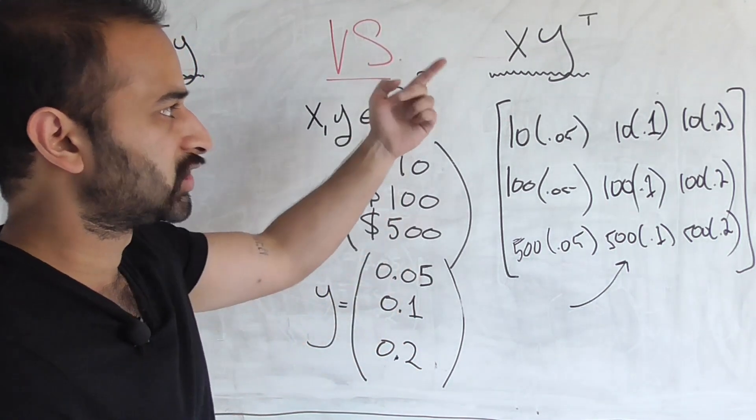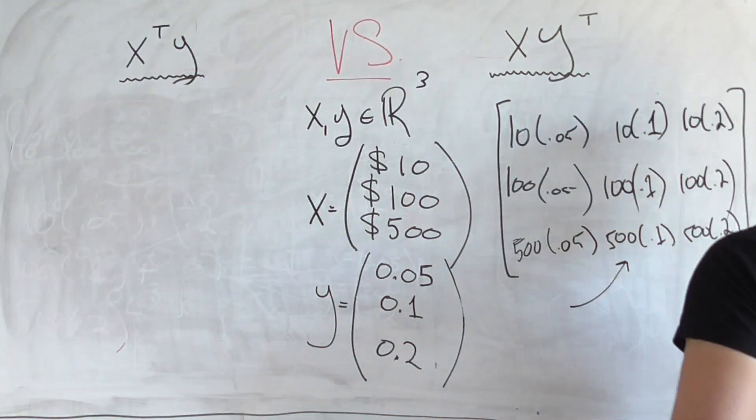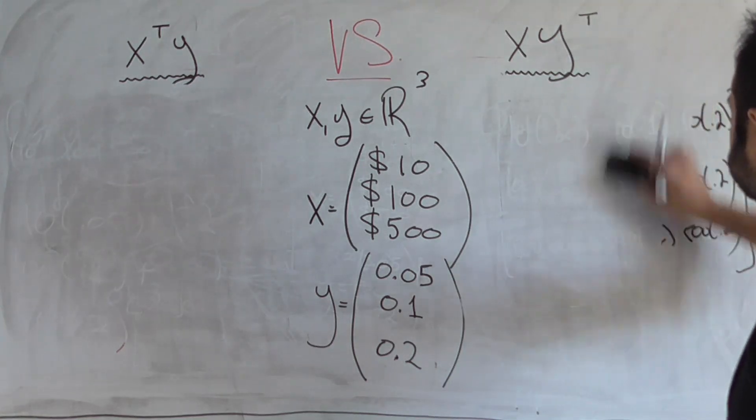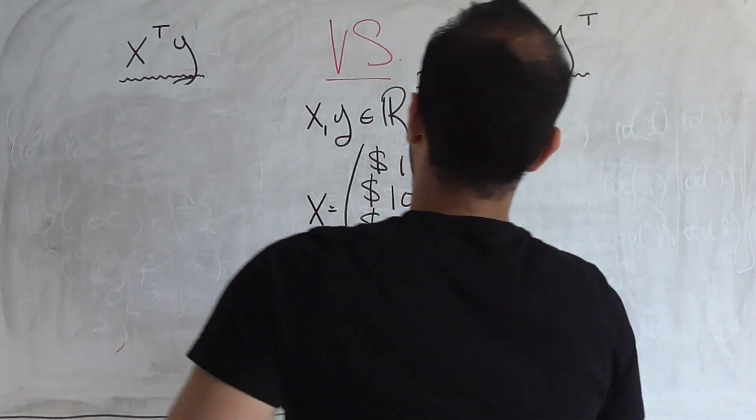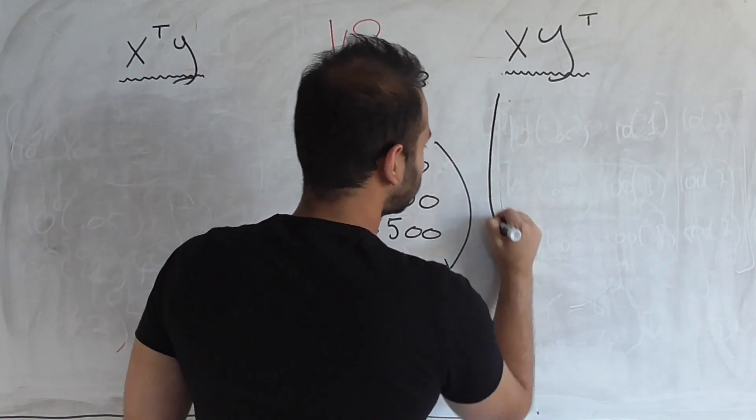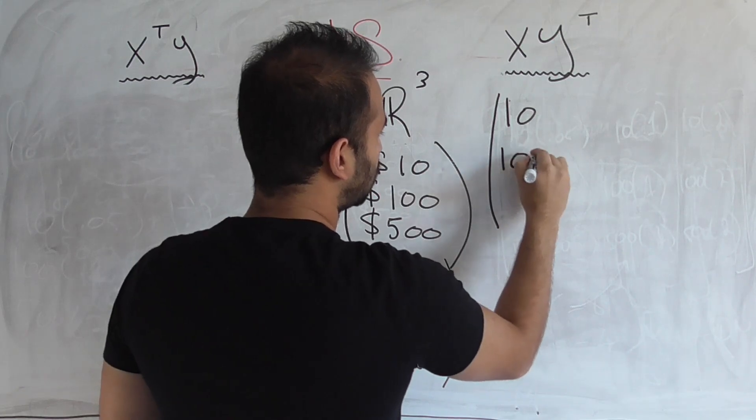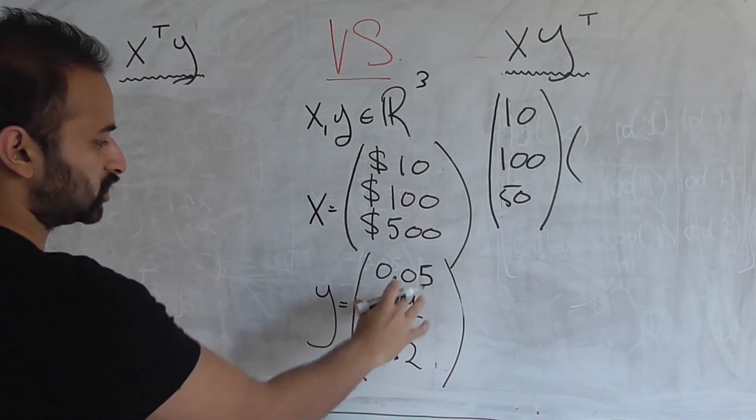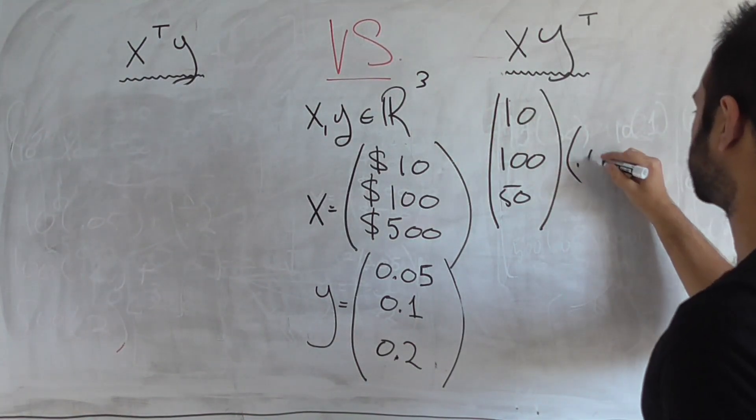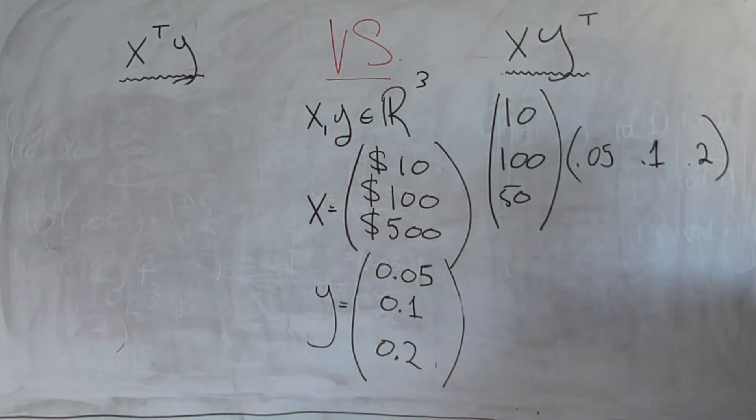Let's see why XY transpose generates the exact same matrix. So let me first get rid of this matrix. So what does XY transpose actually look like? The first thing we do is write out X, which looks like 10, 150. So 10, 100, and 50. And then we write out Y transpose, which is just a row version of the Y vector. .05, .1, .2.